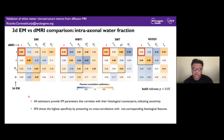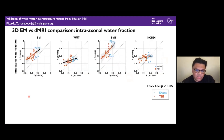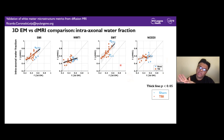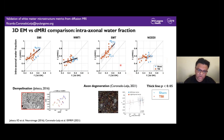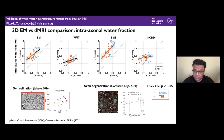Looking at scatter plots for intra-axonal water fraction, all estimators show correlation with histology as in previous studies. However, all of them systematically overestimate F relative to 3D histology — the dMRI-derived F lies above the identity line. Possible reasons include the fact that T2 of the intra-axonal compartment is larger than the extra-axonal compartment, and that un-myelinated axons are not accounted for in segmentation.